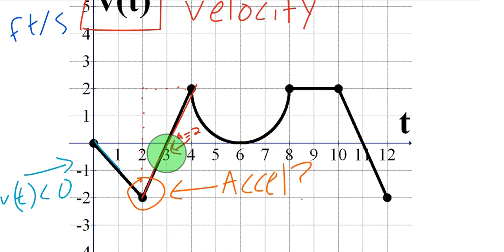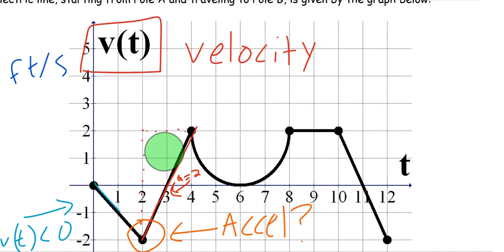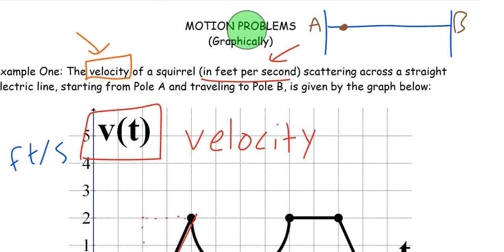How about at T equals 3? Yes, it goes from negative to positive. That means what? That means at time T equals 3, the squirrel's moving left, and then it starts to move right.